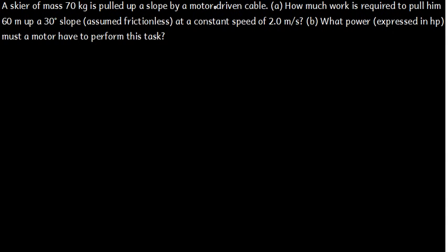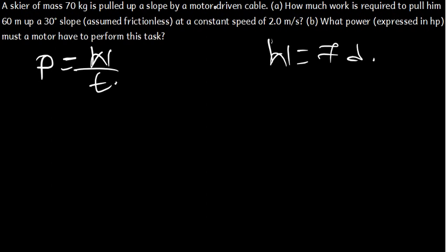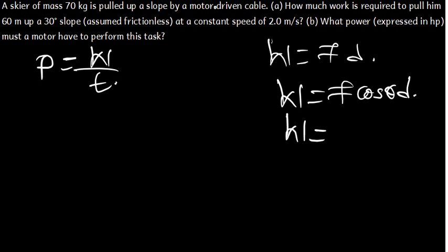The first part asks for work. Work is force times distance, and when applied at an angle, work equals F·cosθ·d. Since there is no friction, the work done by friction is zero. The relevant force is the weight of the object — mg — so work equals mg·cosθ·d.